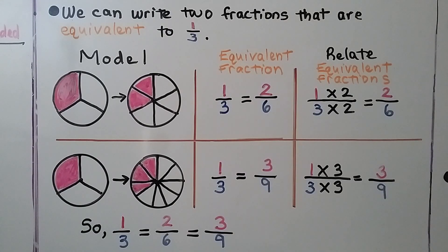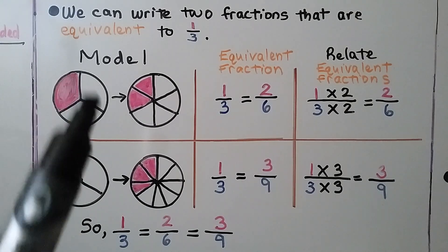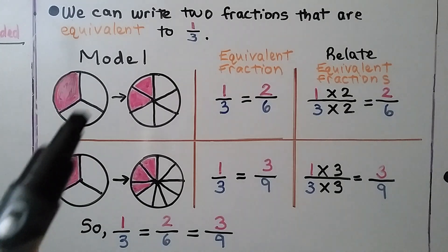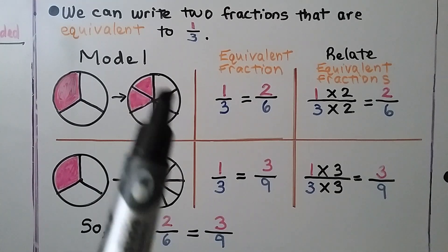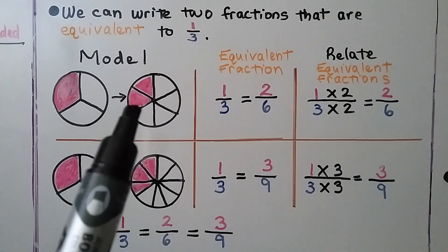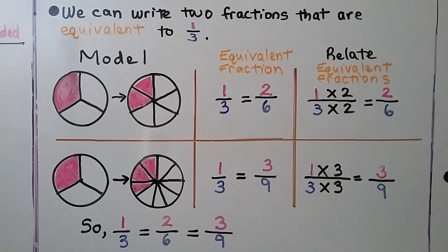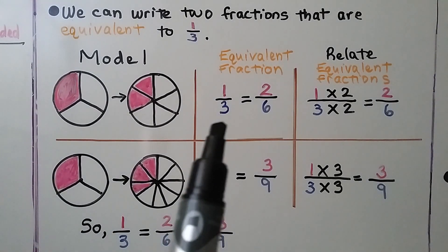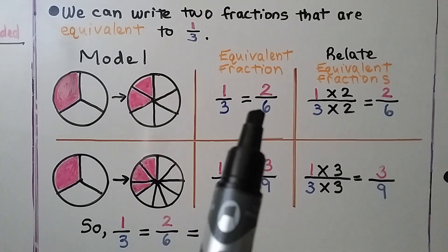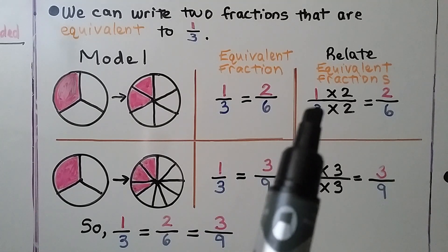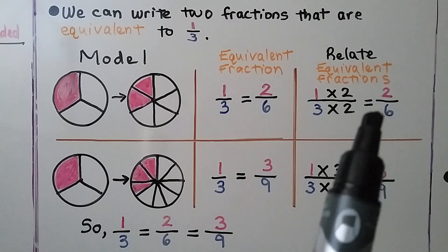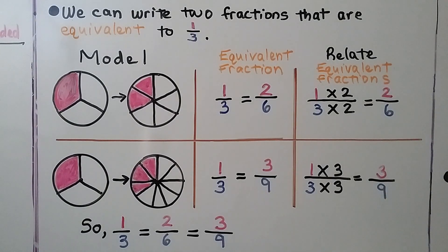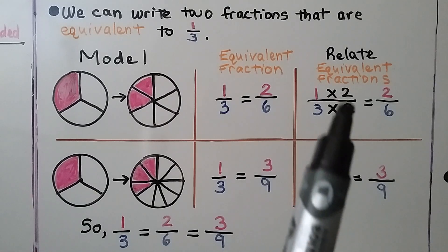We can write two fractions that are equivalent to one-third. Here we have a circular model split into three parts and one part is shaded — one of three equal parts is shaded, that's one-third. Now the model is split into six equal parts and two are shaded. Do you see how they take up the same amount of shaded space? We have the equivalent fractions: one-third is equal to two-sixths. We can relate them by doing one times two, which is two, and three times two, which is six. Our new fraction is two-sixths. We multiplied both the numerator and denominator by the same number, two.